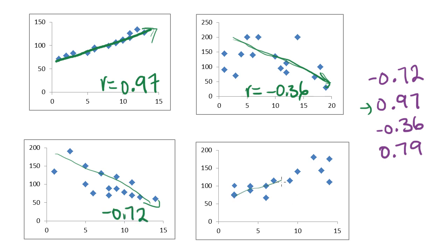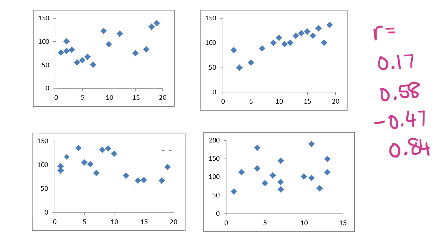And finally, what about this one? This is going in a positive direction, so it's going to be a positive number. But it's not as close to falling in a perfect line as these ones were. It's still pretty strong though. So it's probably going to be above 0.75. And what do you know? Our last option is 0.79 positive.